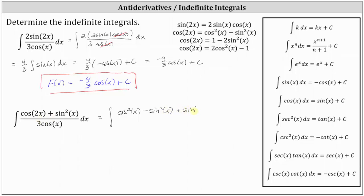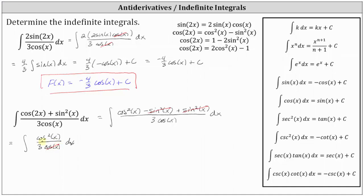Simplifying, notice how we have negative sine squared x plus sine squared x, which is zero, leaving us with cosine squared x divided by three cosine x. We can simplify out one factor of cosine x between the numerator and denominator. The cosine x in the denominator simplifies to one, and cosine squared x in the numerator simplifies to just cosine x to the first.